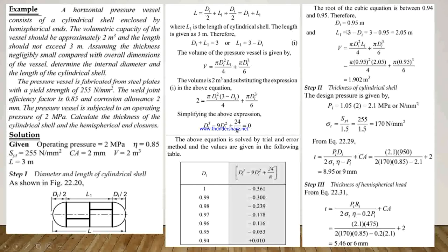To calculate the length, we put this Di value into equation 1 and get L1 = 2.05 m. Putting this L1 and Di value back into the volume equation, we get the total volume as 1.902 m³.